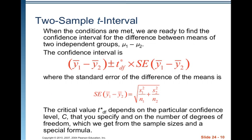Two-sample t interval: when the conditions are met, we find the confidence interval for the difference between means of two independent groups, mu1 minus mu2. The confidence interval is the estimate plus or minus the critical value times the standard error of the estimate. So we have the difference in the sample means plus or minus t* with the degrees of freedom times the standard error of the difference in the sample means — the square root of the sum of the variances based on the sample standard deviations. The critical value t* depends on the confidence level C and the number of degrees of freedom from the sample sizes.